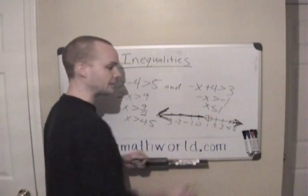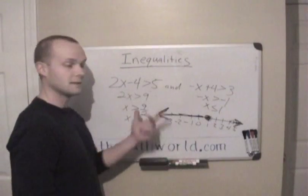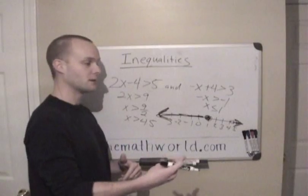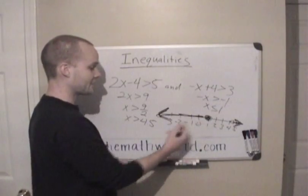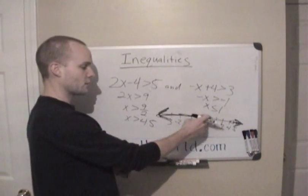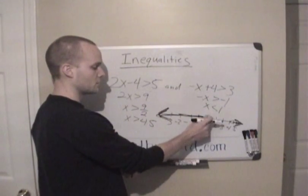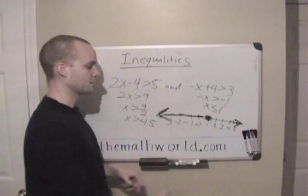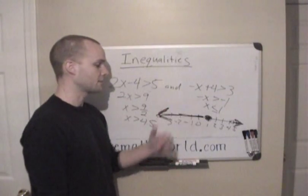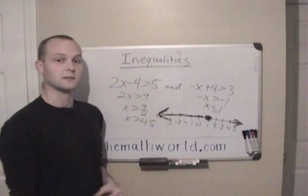Remember, if it's less than or equal to, then we would shade the circle in. So this is inequalities and how you solve them. Always remember: if you divide by a positive number, keep the sign; if you divide by a negative number, flip the sign. When graphing, an open circle means the endpoint is not included, and a shaded circle means it is included. Hope you guys enjoyed this video — please subscribe to the YouTube channel and check out TheMathWorld.com. Thanks for watching, I'll see you next video.